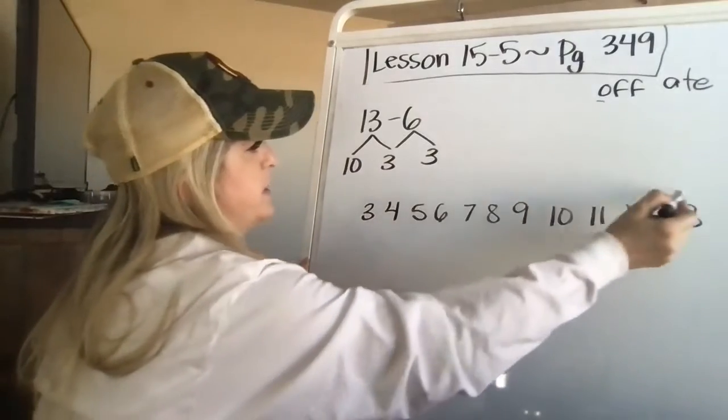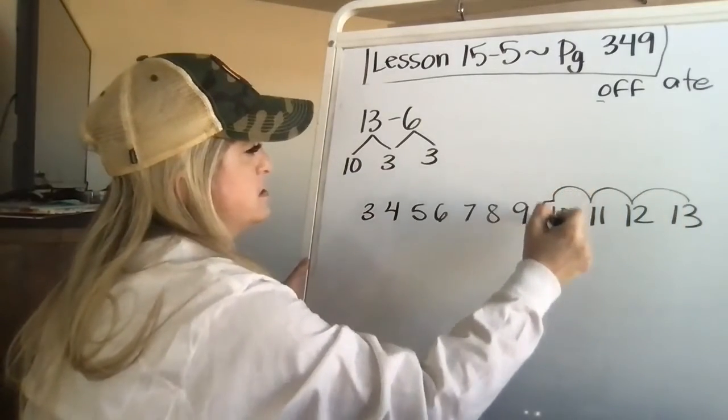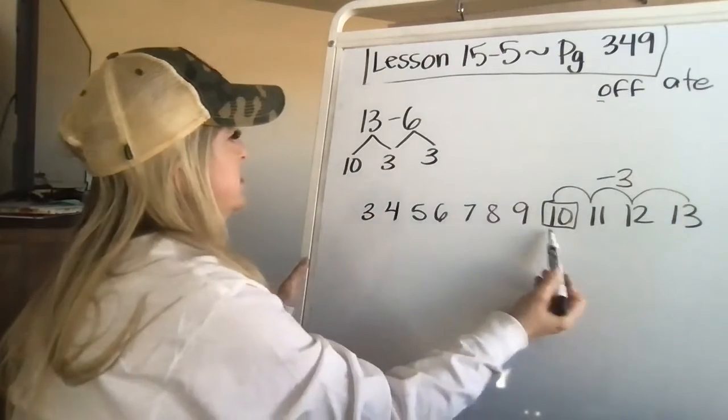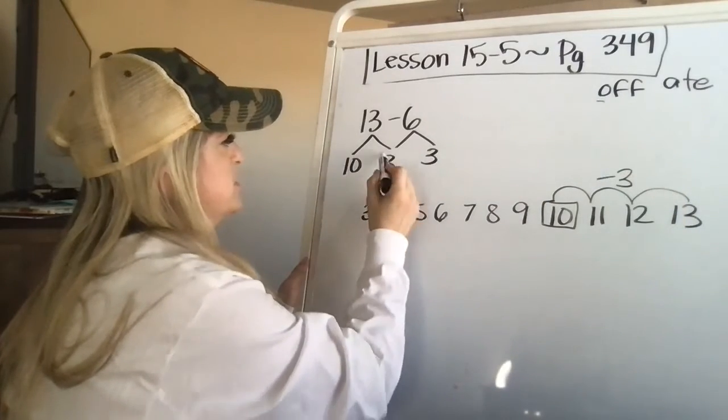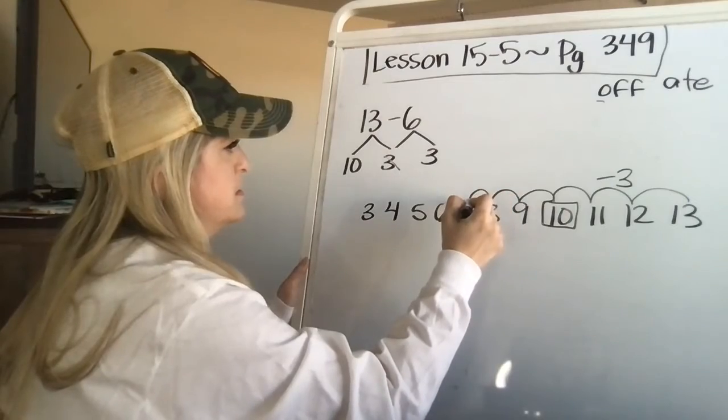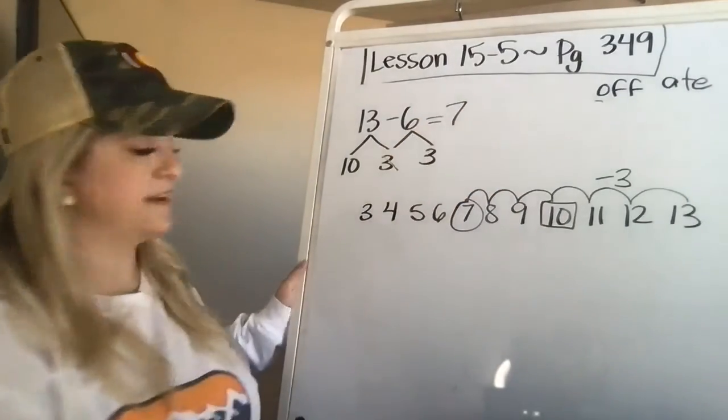Alrighty. Number four, Jim has 13 marbles. Six are blue. The rest are white. How many are white? Okay. All right. So he has 10 and three and three. So I did 13 breaks down into 10 plus three. I know three plus three equals six. So I'm going to do right now I'm going to hop back three, one, two, three, because I know 13 minus three is 10. So I used that three, I have three more to go. One, two, three, and circle where you land. I landed on seven.